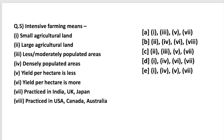The next question: what does intensive farming mean? There are two kinds of farming broadly — extensive and intensive. Intensive farming involves small agricultural land in densely populated areas, with more capital and labor required. The yield per person is less but the yield per hectare is more. It is practiced in India, UK, and Japan. So the correct features are: small agricultural land, densely populated areas, high yield per hectare, and practiced in India, UK, and Japan.